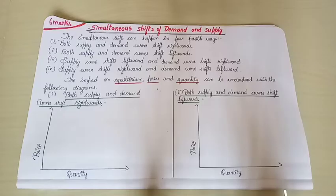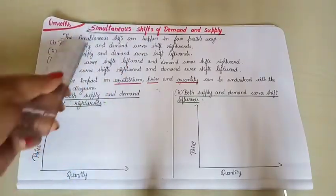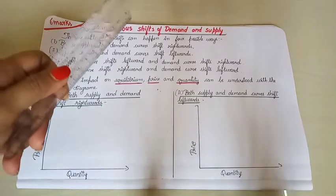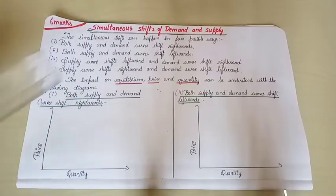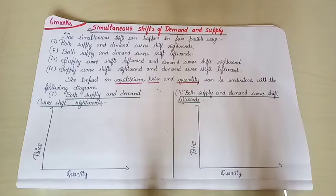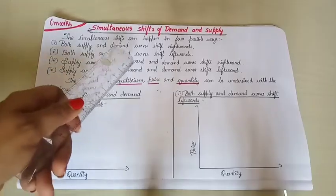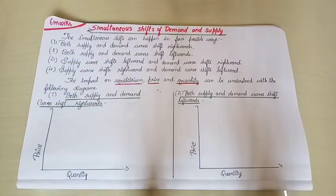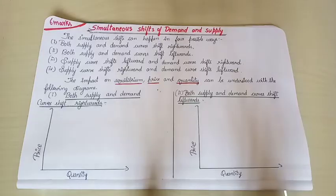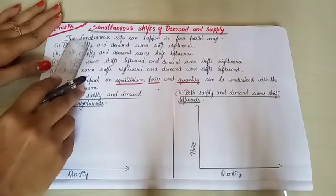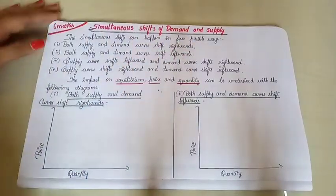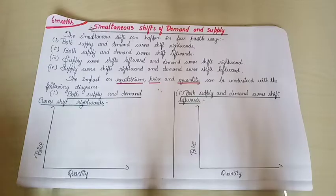We will start the answer with the demand curve, which is downward sloping, and the supply curve, which moves upward. When demand and supply curves shift leftward or rightward simultaneously, it affects the equilibrium price and quantity. The simultaneous shifts can happen in four possible ways — four cases.